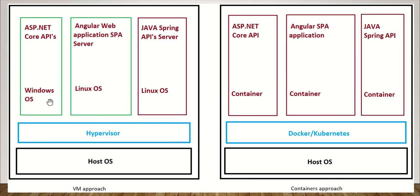Whenever the business says to deploy one more instance of the ASP.NET Core APIs for another region, what we do is take that image, give it to VMware, and using its hypervisor component VMware spins one more instance of those ASP.NET Core RESTful servers on that physical machine.